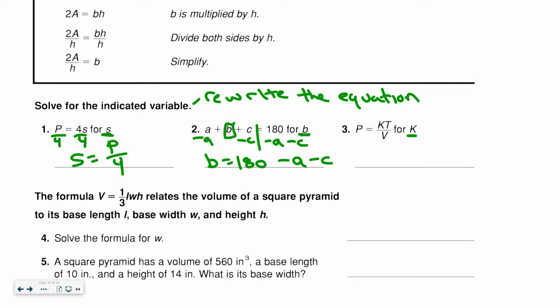For number 3, you see a fraction. Whenever there's a fraction, make the other side a fraction and cross-multiply. So what I get is K times T equals P times V. I now can solve for K by getting rid of the T. What's the opposite of multiplying? Dividing. And again, all I'm doing is rewriting the equation. So I'm not solving. I'm rewriting.